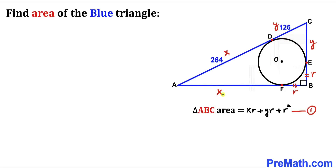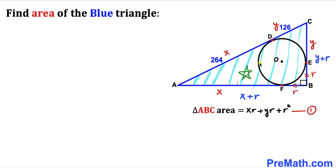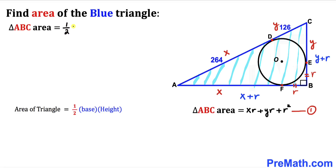Focusing on triangle ABC: side AB equals x + r, and the vertical side BC equals y + r. Using the area formula, Area of triangle ABC = ½ × (x + r) × (y + r). Call this Equation 2.